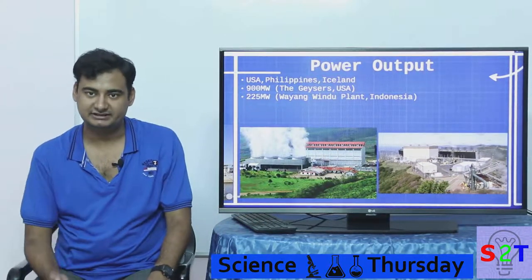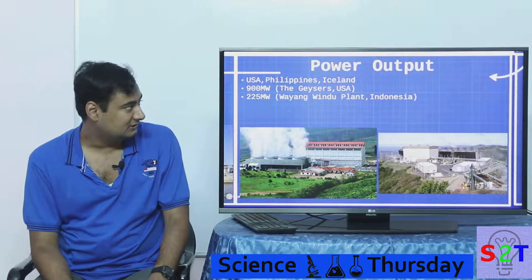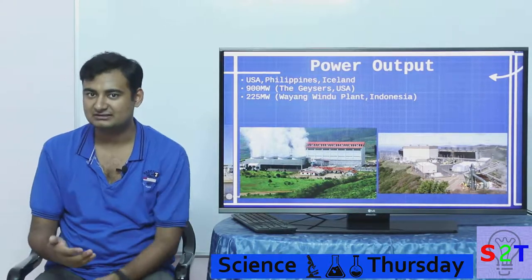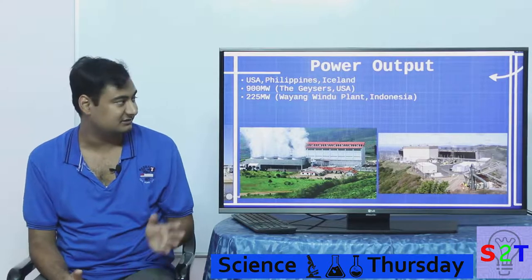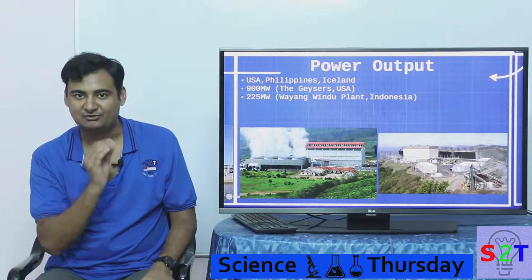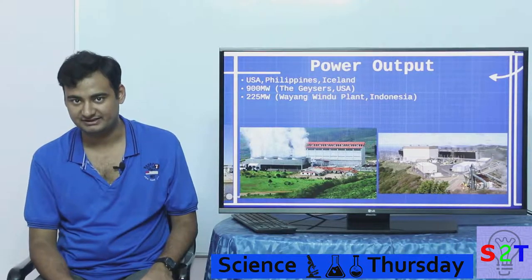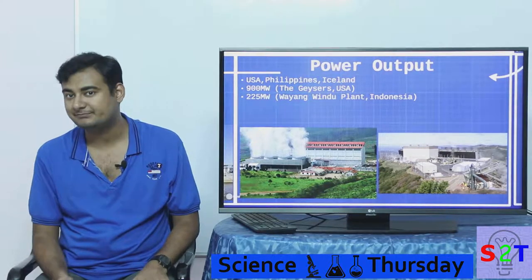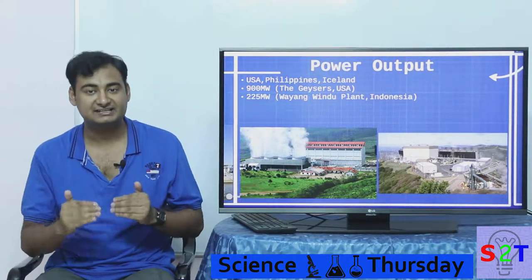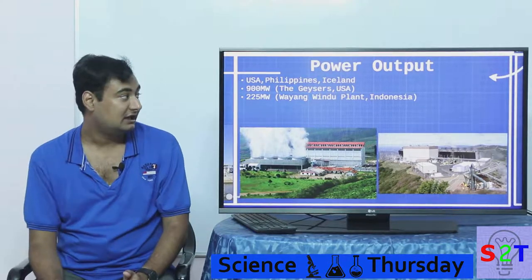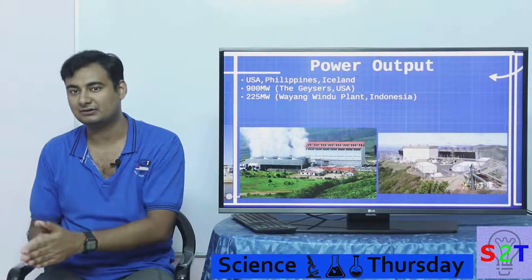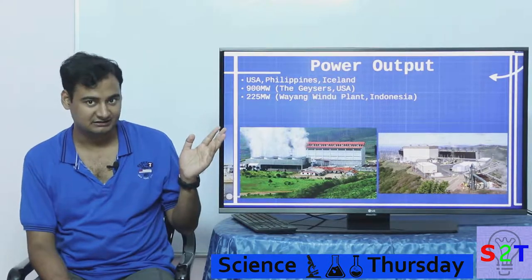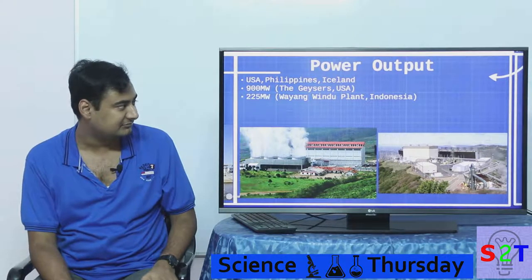So if we have all these things, what kind of power can we expect? The USA, Philippines, and Iceland are kind of leading the charge. The USA is not leading by proportion — even though it has the biggest plant, called the Geysers, it provides only a very small fraction of US power consumption. In the case of the Philippines, they get upwards of 17% of their total energy from geothermal. That's why you hear about Philippines and Iceland — they get a larger proportion of their overall electricity from geothermal. But in terms of raw megawatts, the USA is still ahead, and the second-largest plant is around 225 megawatts.